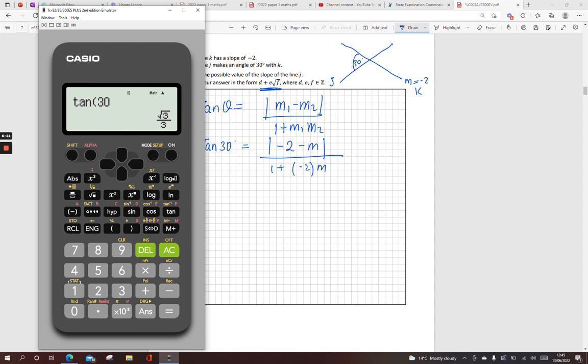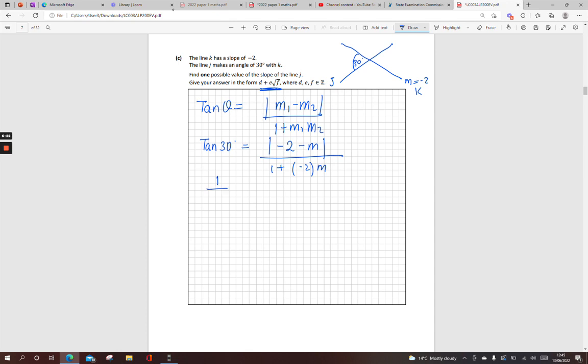Tan of 30 is root 3 over 3. Now, I know from page 13 that tan of 30 is 1 over root 3. It's the same thing, but I'm going to work with 1 over root 3. It just makes it a bit simpler, but you'll get the same answer. 1 over root 3 is equal to my top line there, and I'll just multiply with that bracket, 1 minus 2M. At this stage, I'll cross-multiply. My root 3, my modulus signs there, sorry, not brackets. And to get rid of that modulus signs, I square both sides.